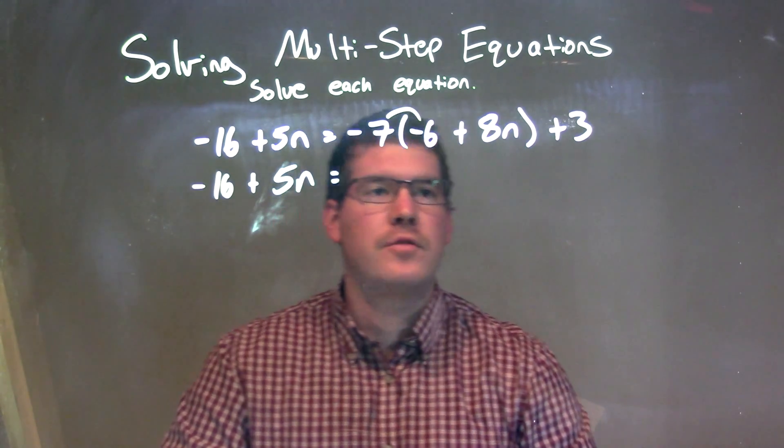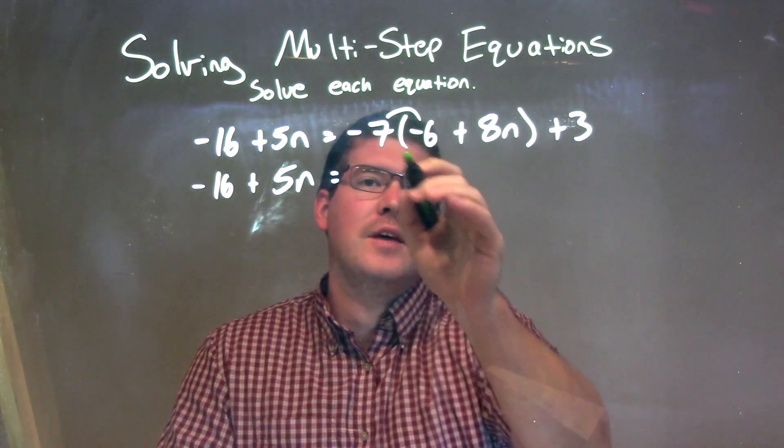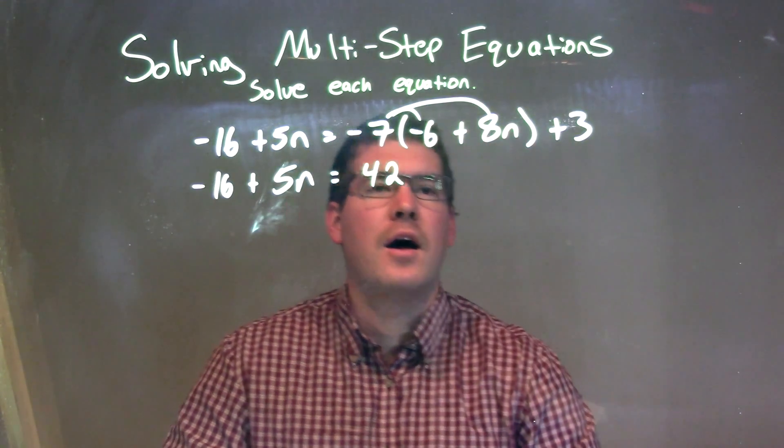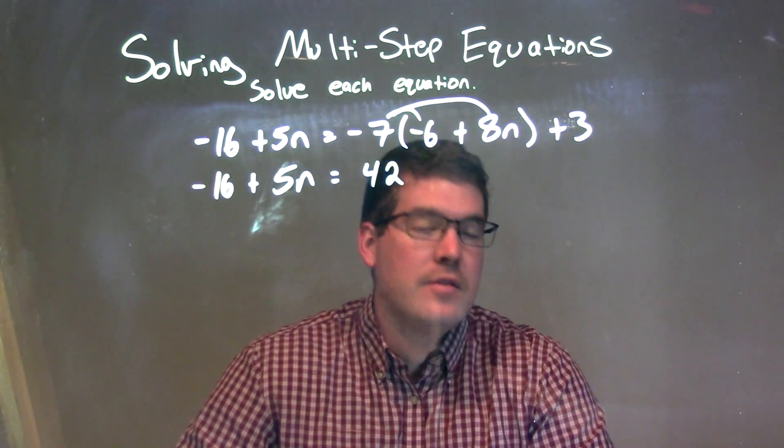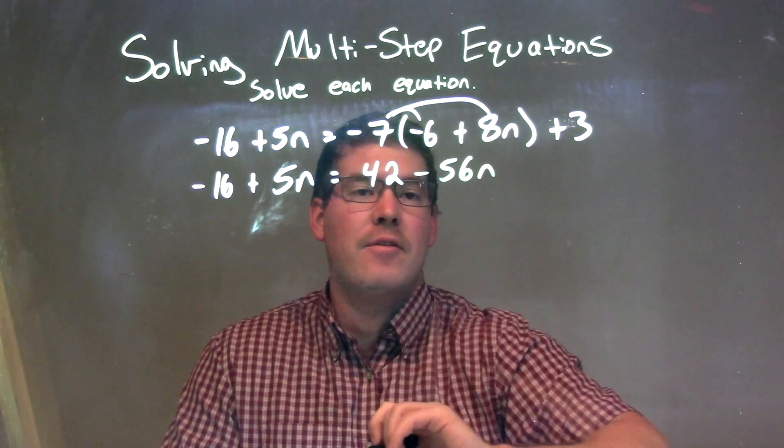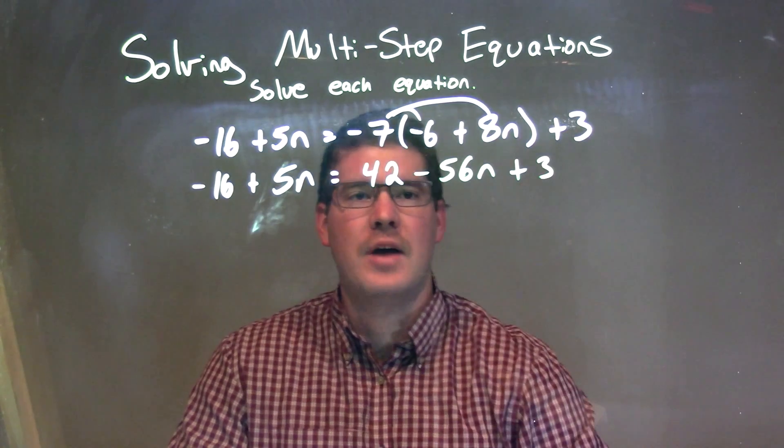I'm going to distribute this negative 7 across to both parts of the parentheses. Negative 7 times negative 6 is positive 42, and negative 7 times positive 8n is negative 56n. And then we add 3 on the side.